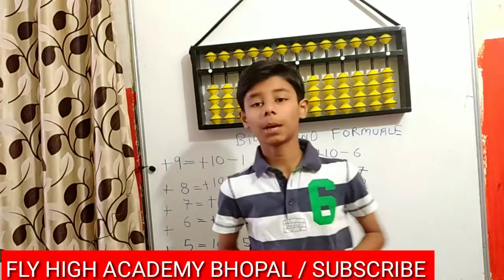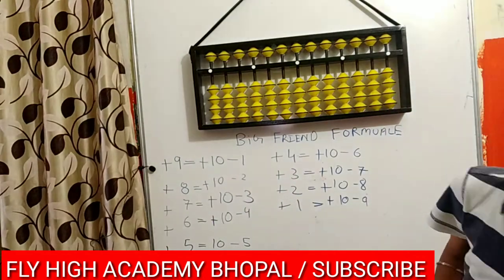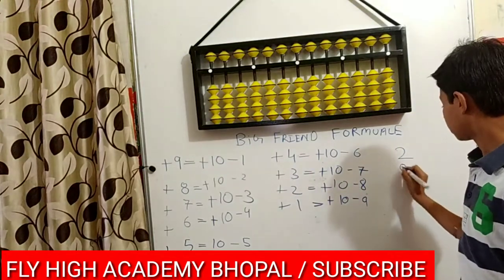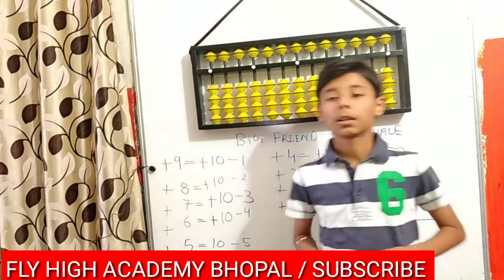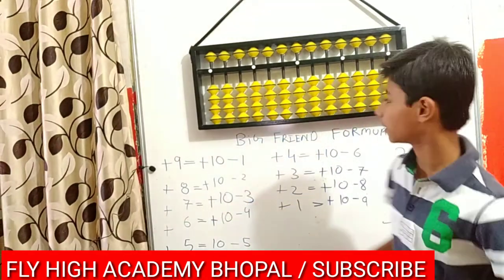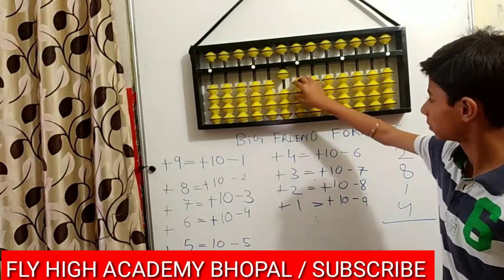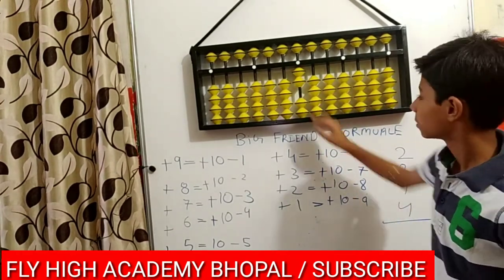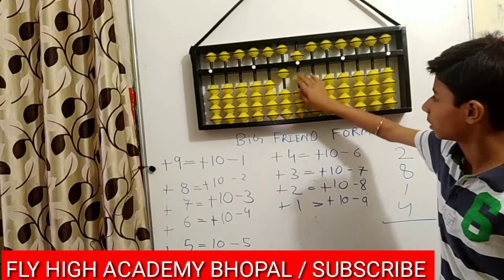Moving forward to the formula plus 8. The formula of plus 8 is plus 10 minus 2. The question is 2 plus 8 plus 1 plus 4. Now the plus 8 formula equals to plus 10 minus 2. So plus 10 and then minus 2 equals to 8. Now plus 1 and plus 4. The answer is 15.